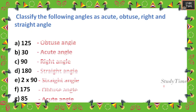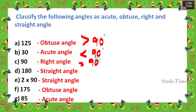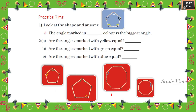Next, classify the following angles as acute, obtuse, right, or straight: 125 degrees is greater than 90 degrees, so it is an obtuse angle. Less than 90 degrees is an acute angle. 90 degrees is a right angle. 180 degrees and 2×90 degrees are both straight angles. 170 degrees is obtuse. 85 degrees is less than 90 degrees, so it is acute.